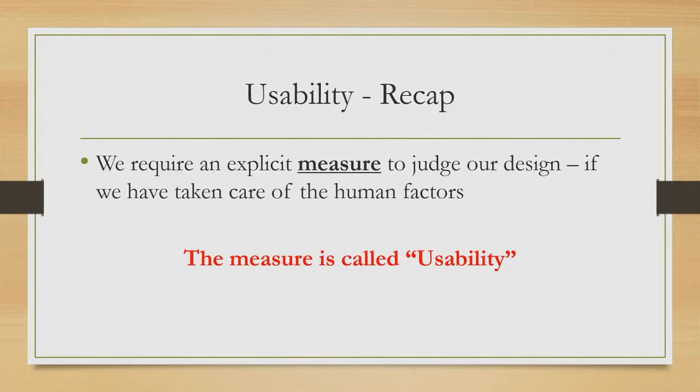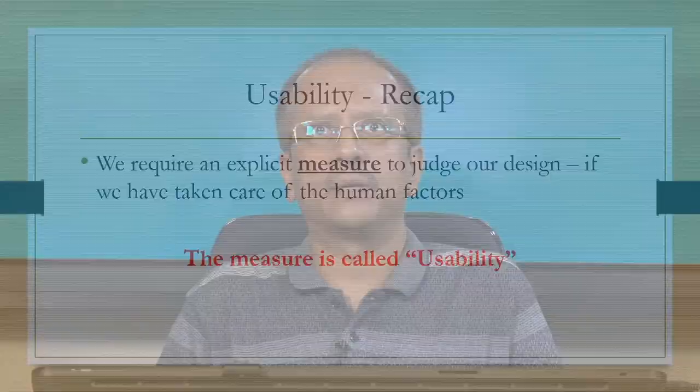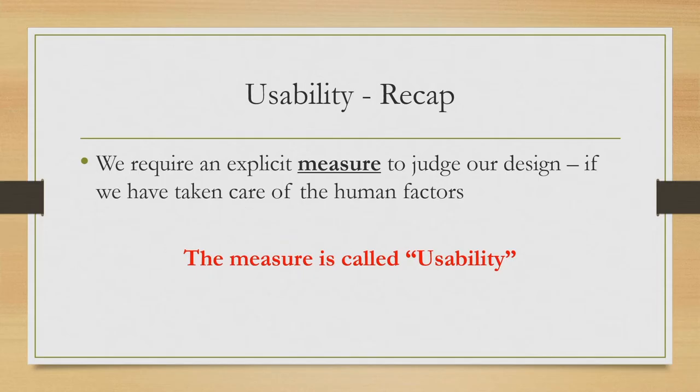In other words, the objective is to ensure usability of the product. Let us quickly recap the idea of usability. When we perform empirical evaluation of the interactive software we are developing, what do we really mean by usability? We discussed usability at the beginning of this course — in the first week itself. Since usability is going to be the main objective for this stage, let us recap the idea. Briefly, we can refer to usability as an explicit measure to judge our design — specifically whether we have taken care of the human factors.